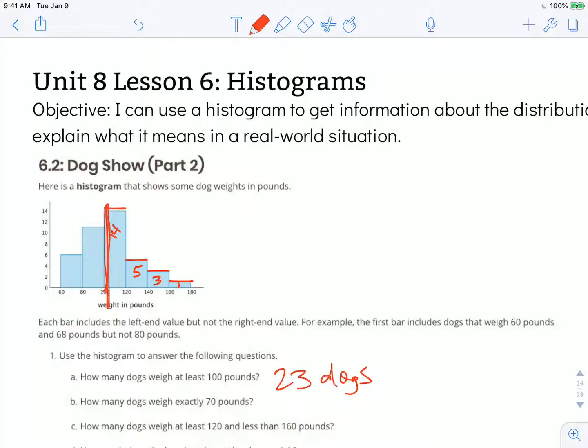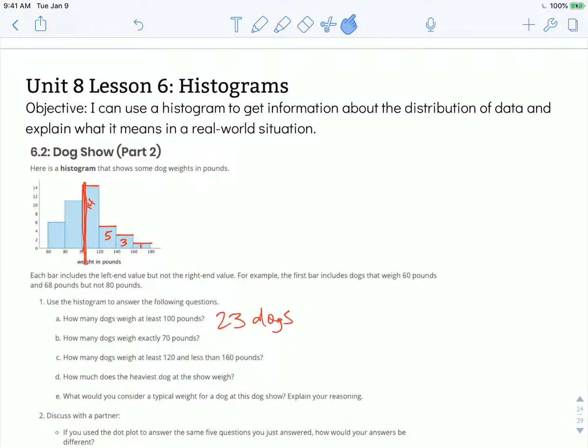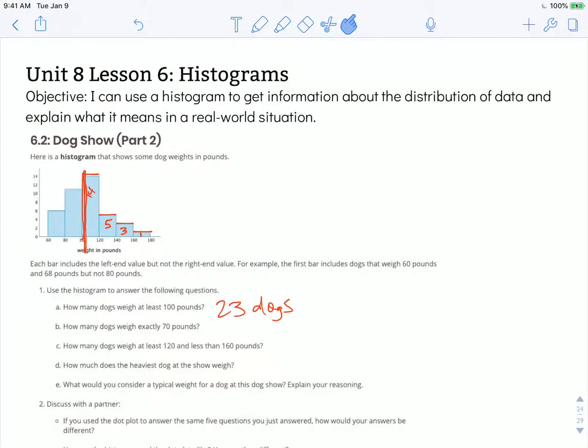How many dogs weigh exactly 70 pounds? Well again with a histogram we have a grouping, a band that doesn't tell us exact weights. We just know that there are 6 dogs somewhere in between 60 pounds and just under 80 pounds. So all 6 of them could weigh exactly 70 pounds or none of them could weigh exactly 70 pounds. We have no idea. So there's no way to tell using this histogram.